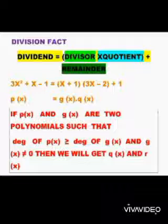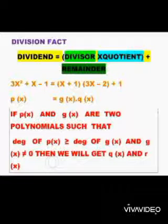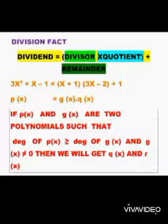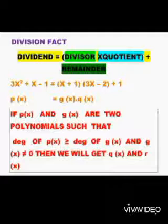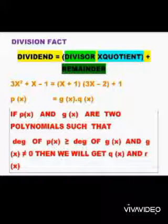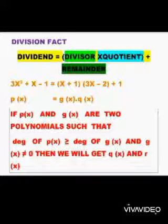And G(x) is not equal to 0. Then we will get Q(x) and R(x). So we say that when P(x) is divided by G(x), it gives Q(x) as the quotient and R(x) as the remainder.